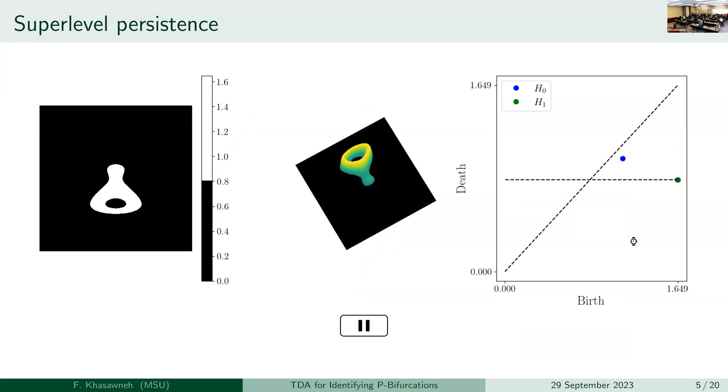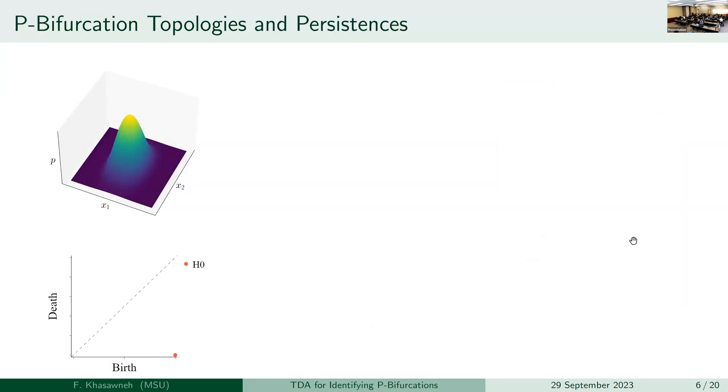Okay, so before I start talking about the approach that we're using, I just want to remind you of the tool that I will be using. I will be using two flavors of persistence in this talk. The first one is super level persistence. Okay, so here I have just one video to show you this type of persistence that I will be using, and I'll be applying this to the PDFs that I showed you, get a persistence diagram, and then use that to say something about stochastic bifurcation.